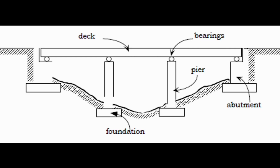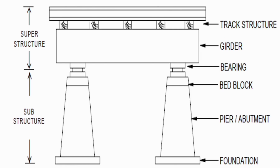Next, you are watching the basic components of bridges. The basement of a bridge is called the foundation, and both ends of the bridge are called abutments. The inner columns are called piers. The distance between piers is called opening or span. The foundation, piers, abutments, and bed blocks are called substructures.